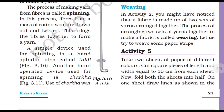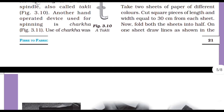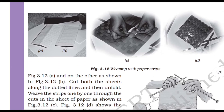In Activity 5, you will take two sheets of paper of different colors. Cut square pieces of 30 cm length from each sheet. Fold both sheets in half. On one sheet, draw a line as shown in figure 3.12. Take strips of two different colors as shown in the picture.